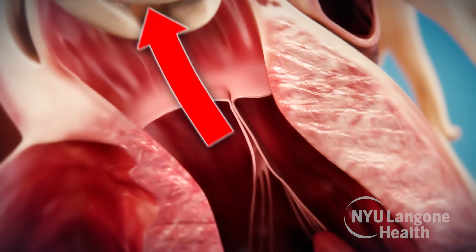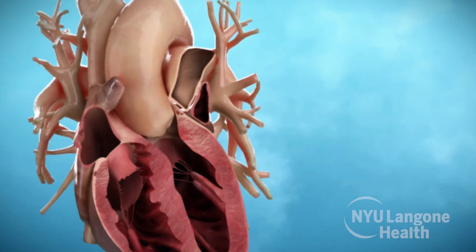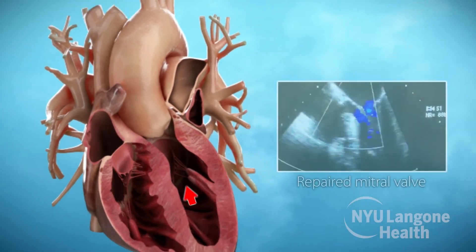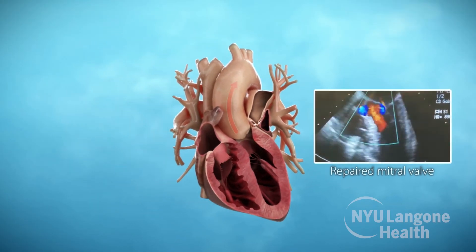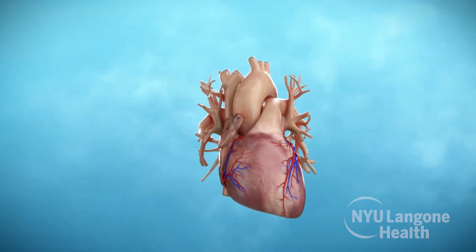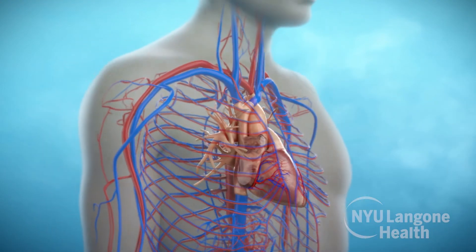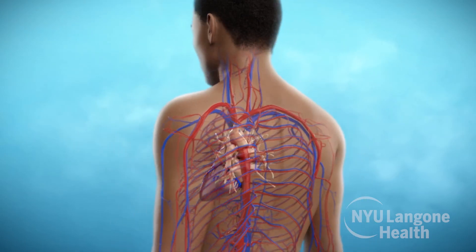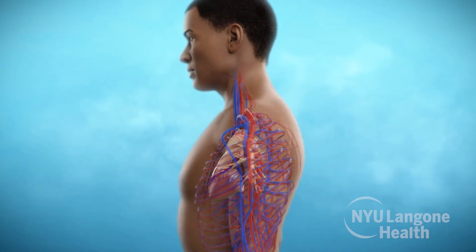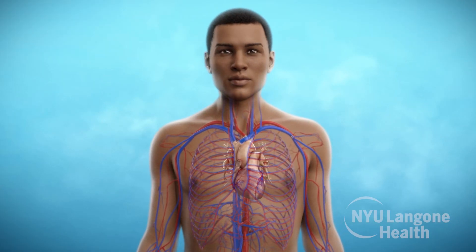Once surgery is complete, the doctor makes final measurements to confirm that, even under conditions of stress such as exercise, blood can flow unobstructed and leakage from the mitral valve has stopped. The heart can now function normally, and patients often experience immediate symptom relief. After a few days in the hospital, patients return home and gradually resume normal activity, including exercise.